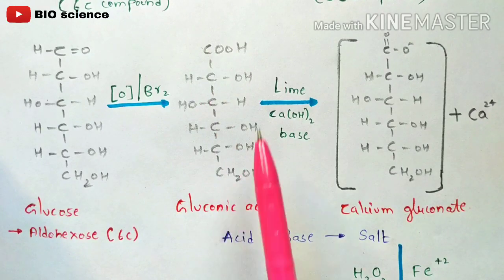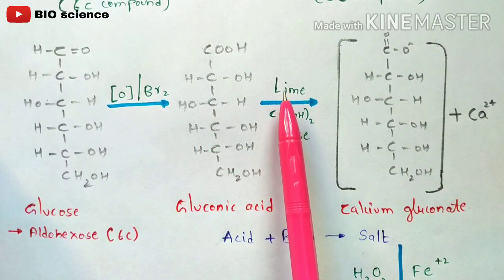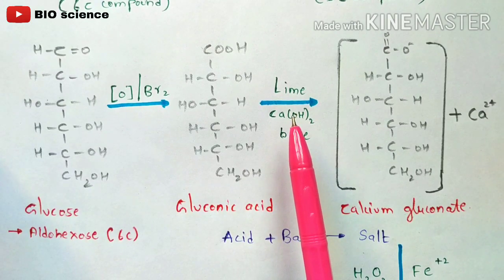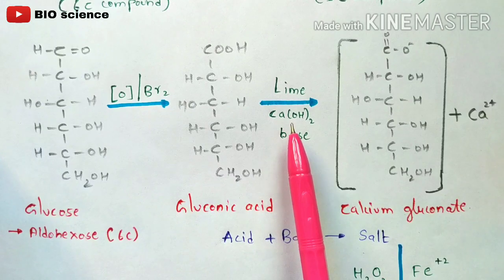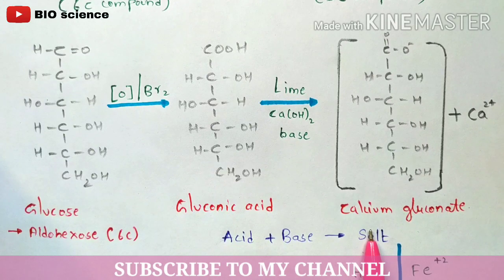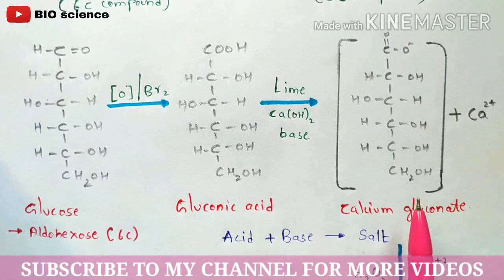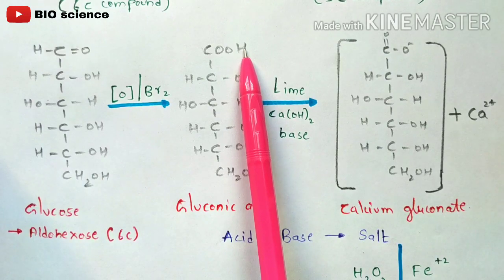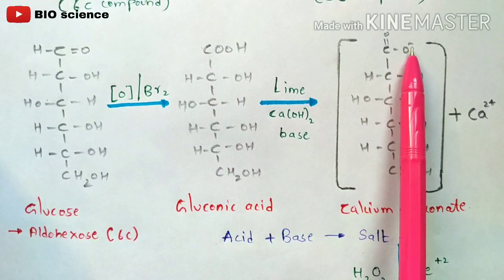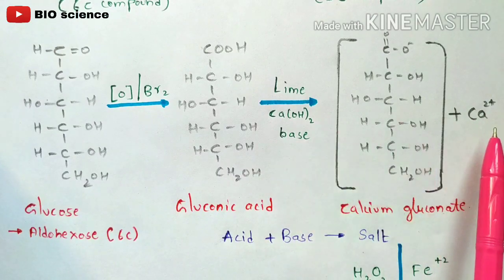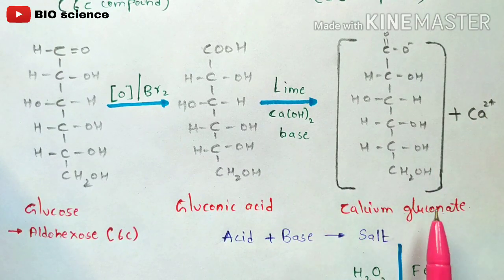This gluconic acid is then treated with lime — Ca(OH)₂ — which is a base. When acid reacts with base, it forms a salt. The acid here is gluconic acid and the base is Ca(OH)₂, so the salt formed is calcium gluconate. The hydrogen at the first carbon is removed, leaving a COO⁻ ion. The Ca²⁺ calcium ion is associated, giving us calcium gluconate.